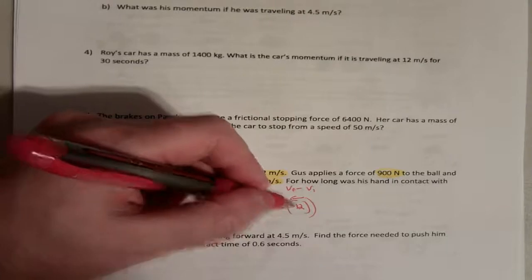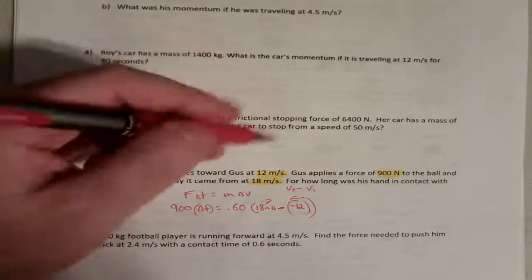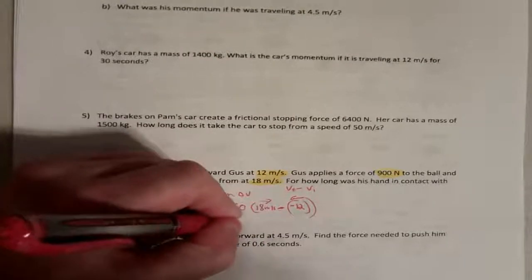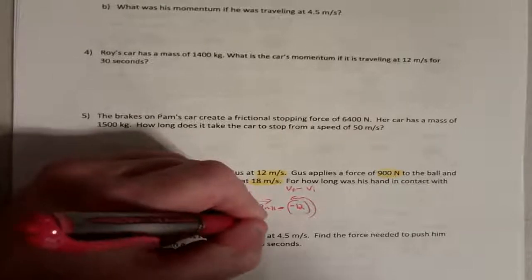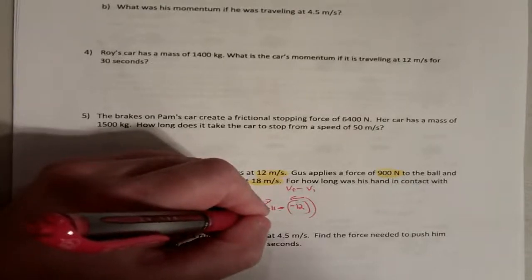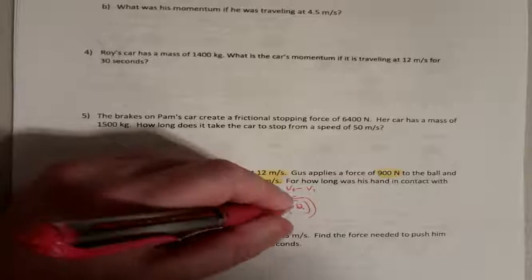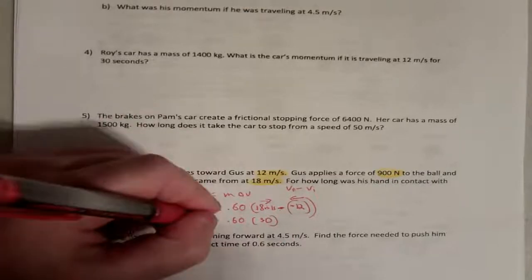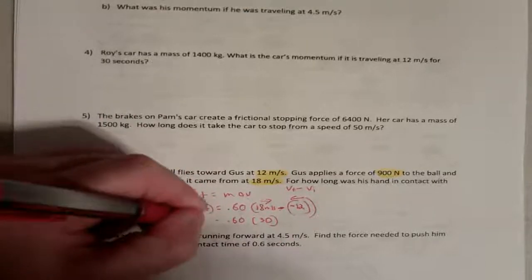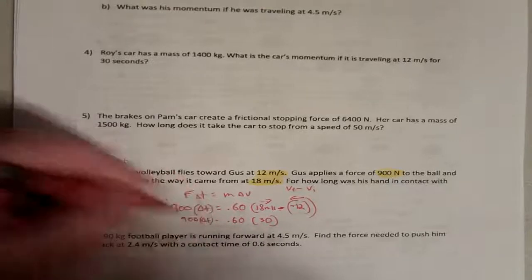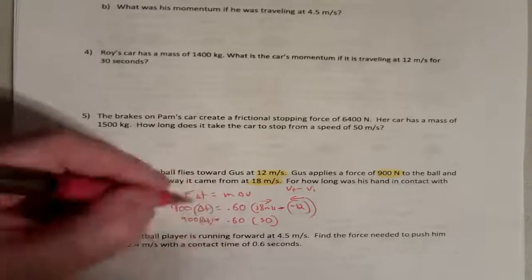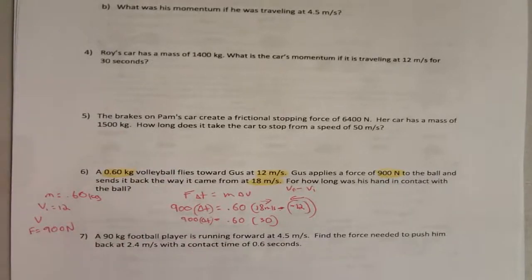So, minus and minus equals plus, right? So, that should be 0.60 times 30, because minus and minus is plus, which equals 900 times change in time. Now, the rest is cake, right? The rest is a piece of cake.